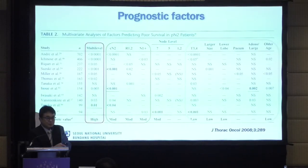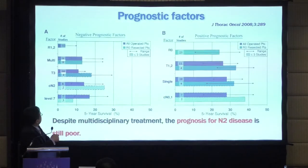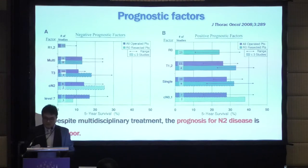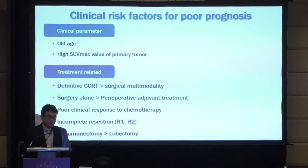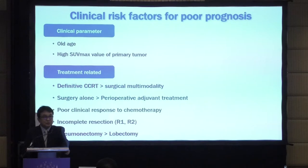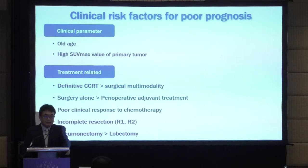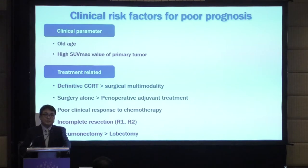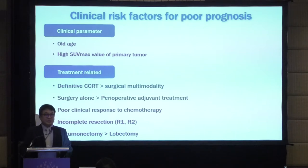Many papers check prognostic factors. R1, R2, multi-station, advanced T-stage, and clinical N2 show poor prognosis, while R0, earlier T-stage, single station, and clinical N0 show better prognosis. Not only oncological, but also clinical risk factors for prognosis can be checked: old age, high maximum SUV uptake in primary tumors, patients receiving CCRT rather than surgical multi-modality therapy, poor response to chemotherapy, incomplete resection, and pneumonectomy all predict poor prognosis.